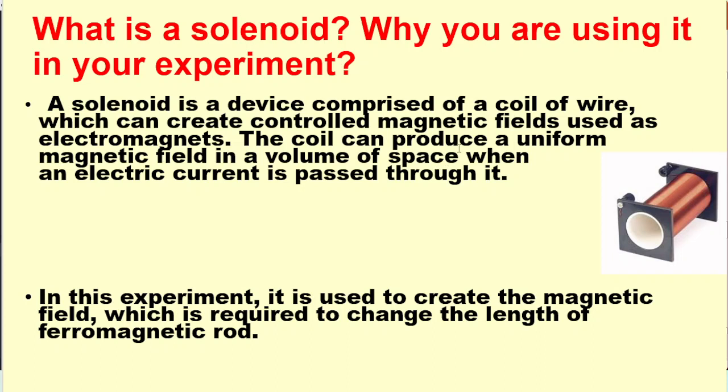What is solenoid and why are you using it in your experiment? A solenoid is a device comprised of a coil of wire which can create controlled magnetic field used as electromagnet. The coil can produce a uniform magnetic field in a volume of space when an electric current is passed through it. In this experiment we are using it for creating the magnetic field which is required to change the length of the ferromagnetic rod.